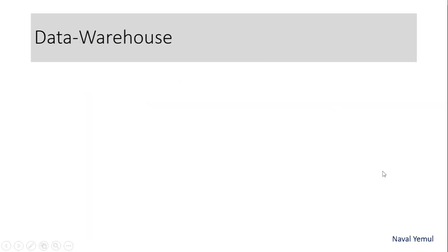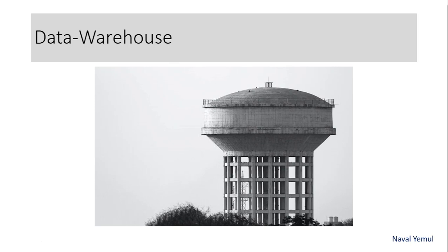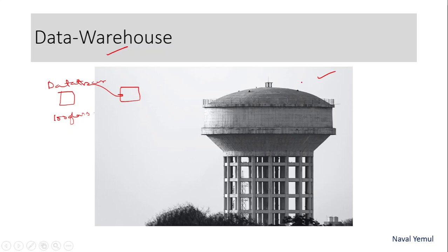The next image is about data warehousing. It has a huge amount of water tanks. In a database, you can store up to hundreds of glasses' worth; in a data warehouse, you can store hundreds of databases — it is a giant, very big database. It is a structured one — it handles structured data, meaning data that is always in table format. The smaller version is your database.